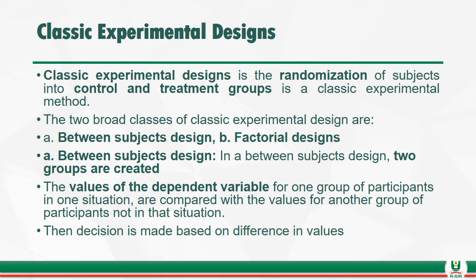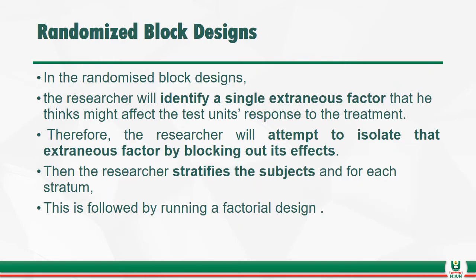In a between-subject design, two groups are created. The values of the dependent variable for one group of participants in one situation are compared with the values for another group of participants in another situation, and the decision is made based on the difference in values. In the randomization block design, the researcher identifies a single extraneous variable that might affect the test unit's response to the treatment. The researcher attempts to isolate that extraneous factor by blocking out its effects, then stratifies the subjects, and for each stratum, a random design is followed.